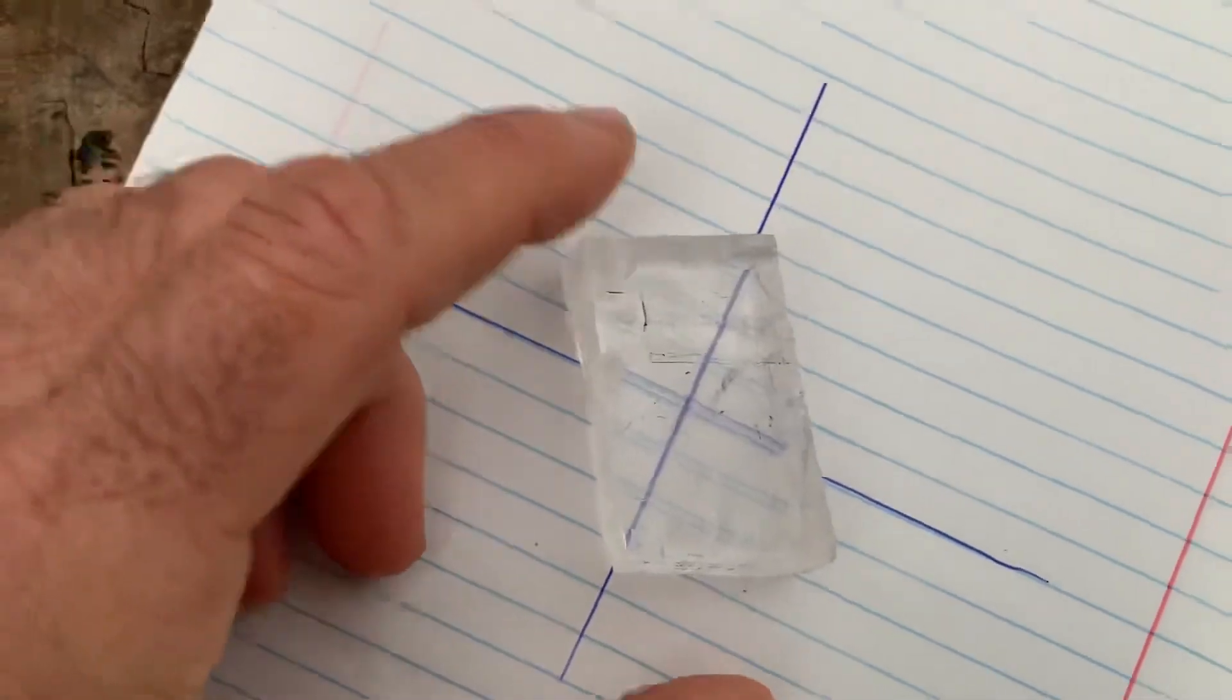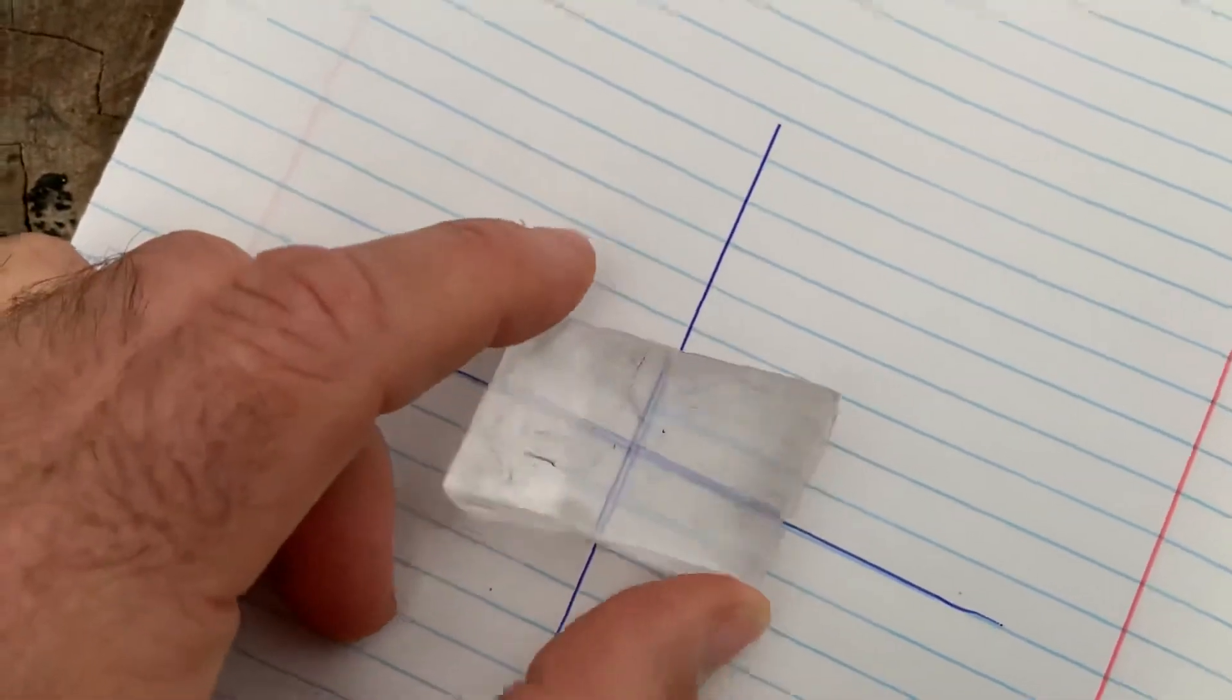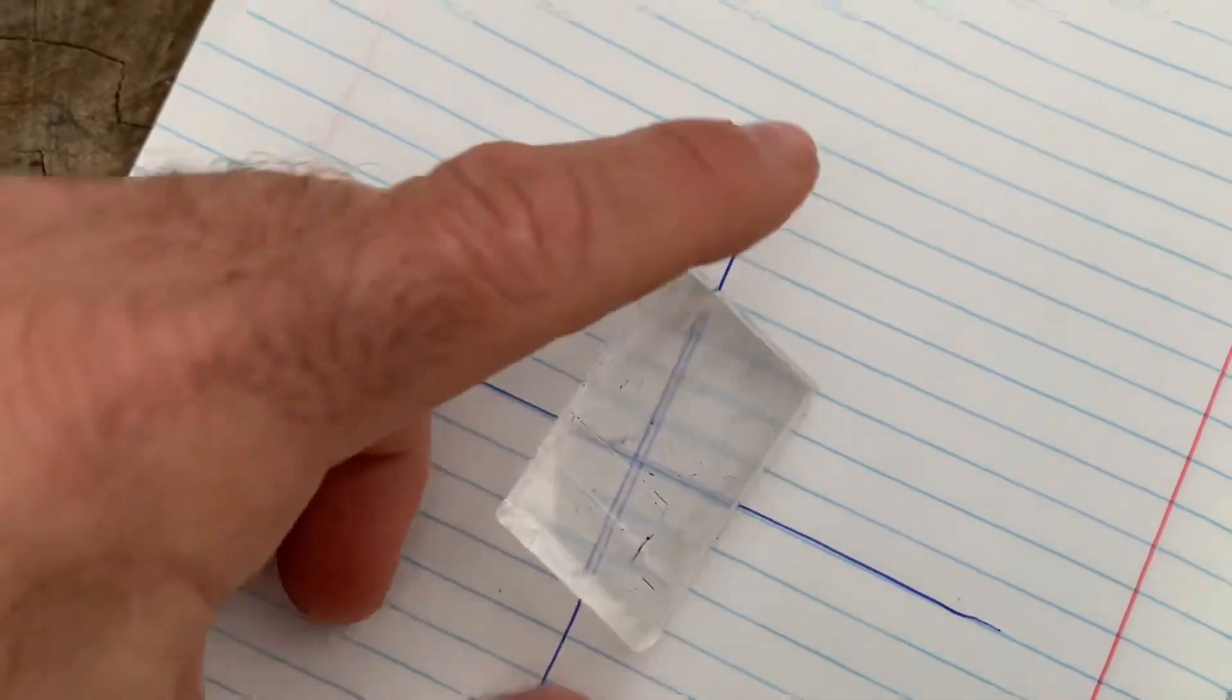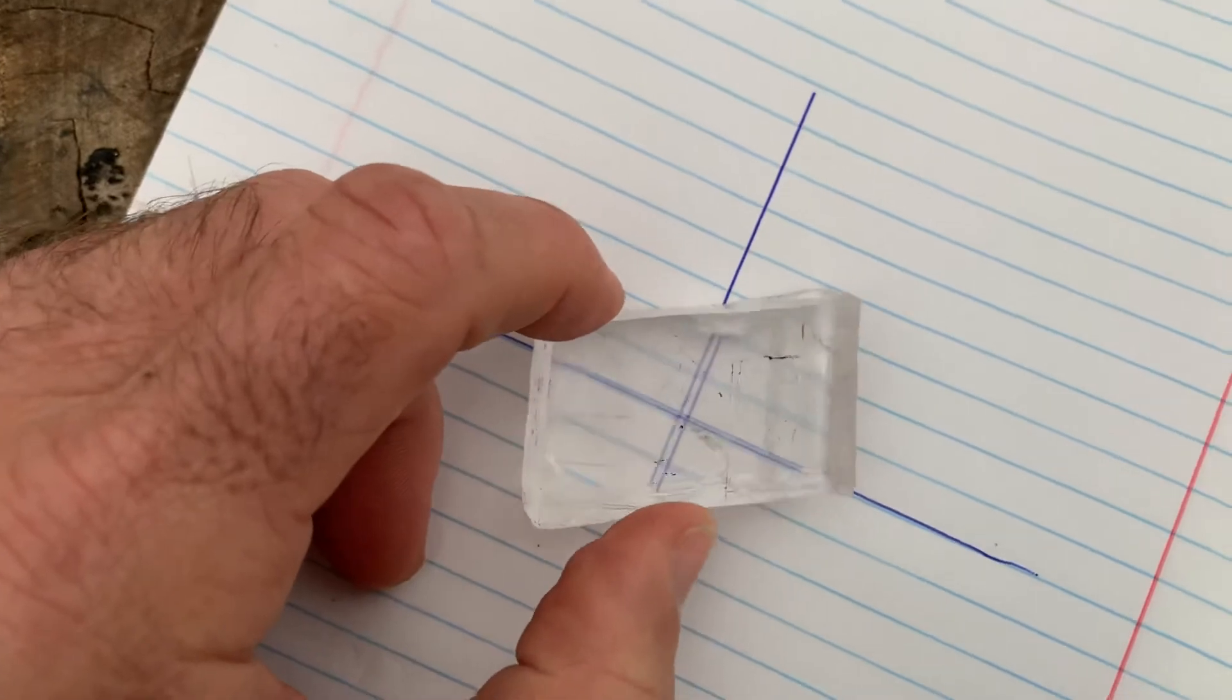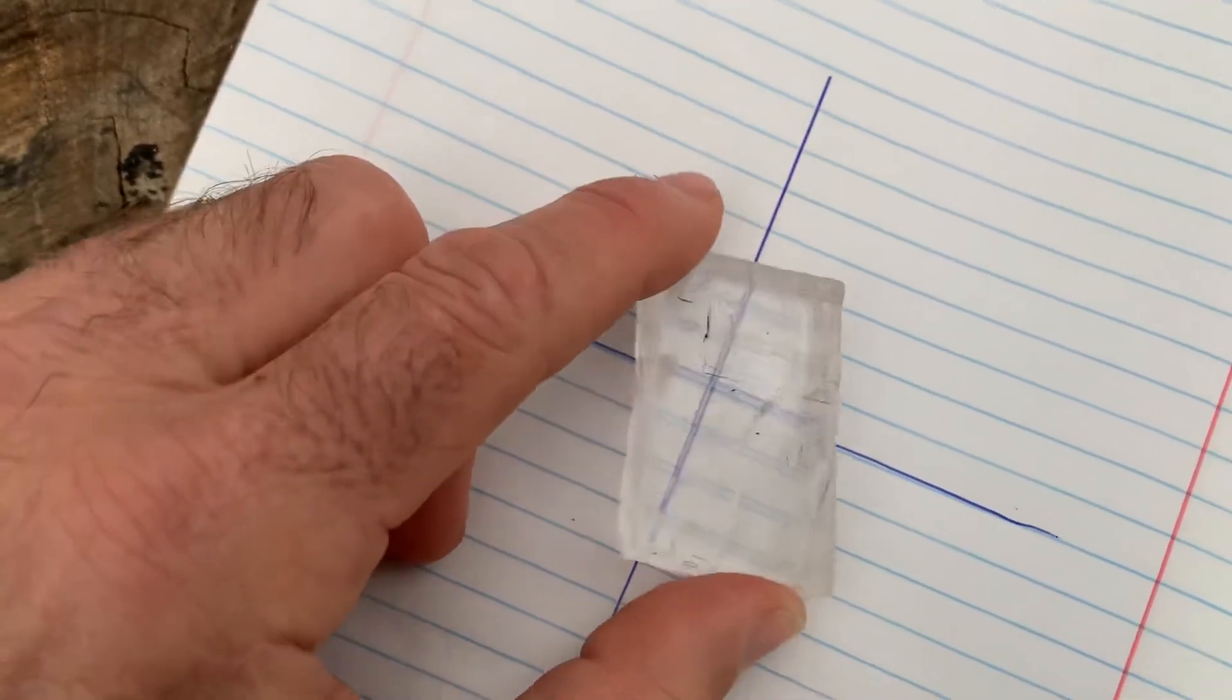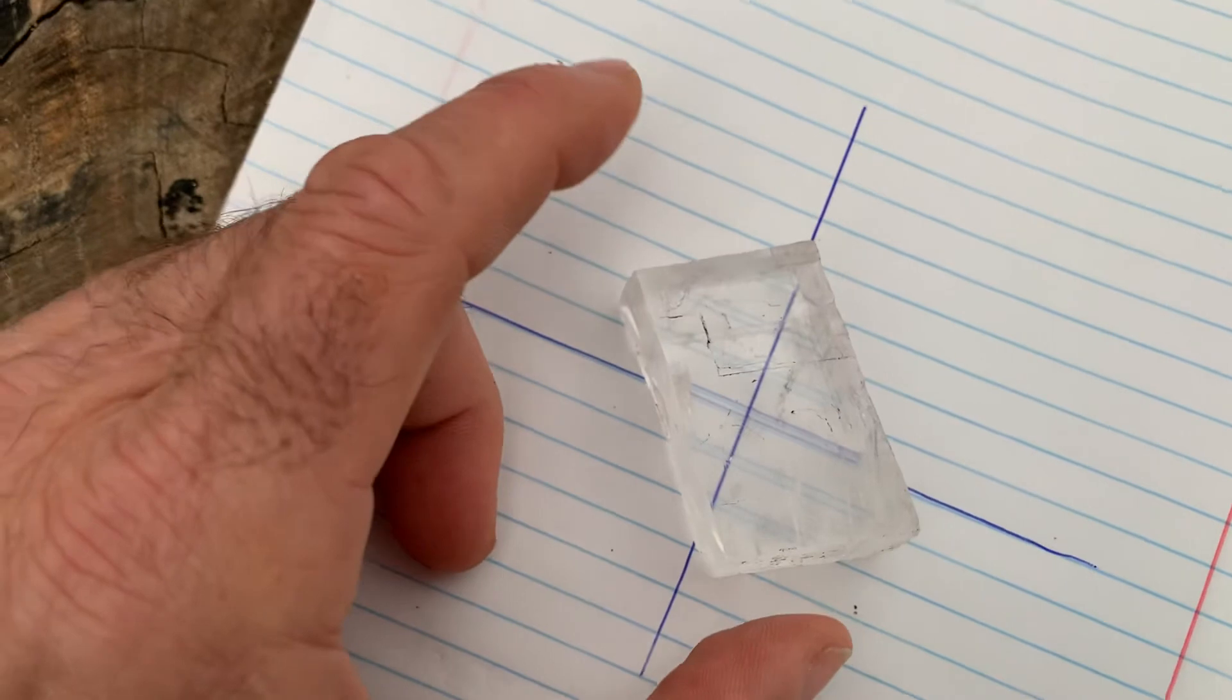So right now, like I said, I can change this. That change of the lines is just double refraction. It has nothing to do with the direction of the sun relative to the crystal.